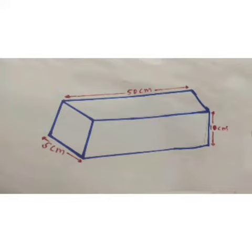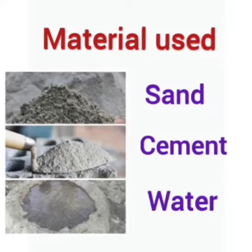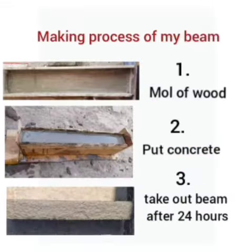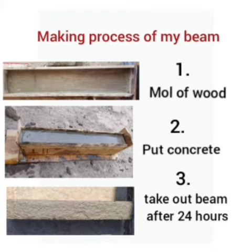The self-weight of my beam is 8.3 kg. To make the cement mortar, I have used sand, cement, and water in the ratio of 3:2:1. For the making process, I first took a mold of wood with the required dimensions, then put the concrete mixture into the mold.